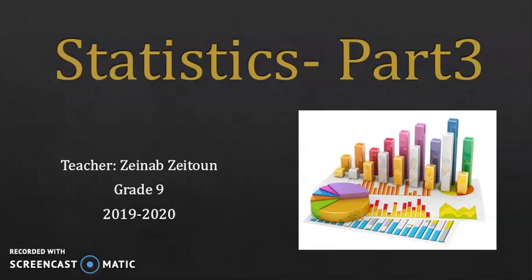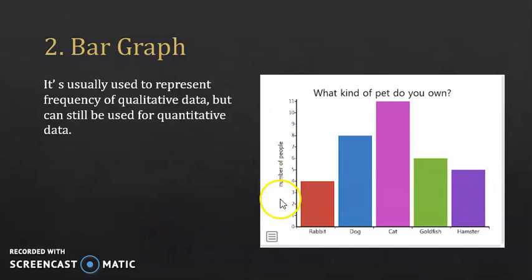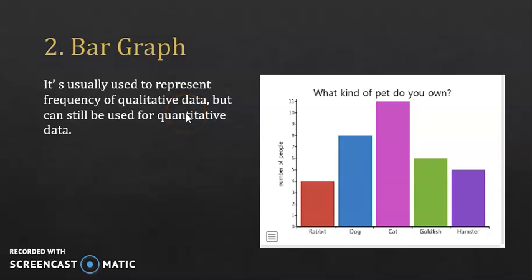The objective of this part is to represent statistical data on a bar graph and on a circular diagram. In the previous video, you learned how to construct the polygon of frequencies. So this is how a bar graph looks like — this is another way of representing statistical data, other than the polygons. This bar graph is usually used to represent frequency of qualitative data, but can still be used for quantitative data.